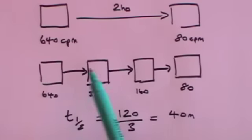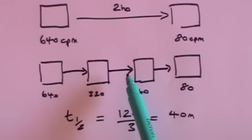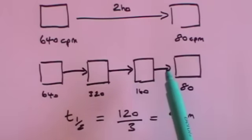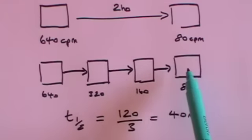After the first 40 minutes you halved. After the second 40 minutes you halved again. And after the third 40 minutes you halved again to the rate that you were given.